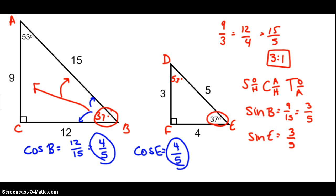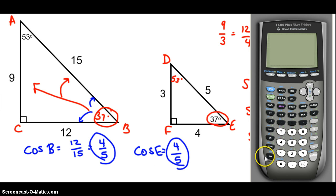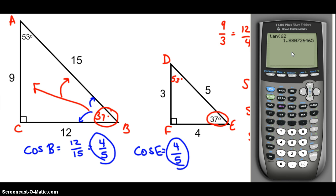If we pop up our graphing calculator and type in an angle measure — let's do the tangent of 62 degrees — that gives us some value. This value represents the ratio of the opposite side to the adjacent side with respect to a 62-degree angle. It doesn't matter what the actual side lengths of the right triangle are. We're really just using the ratios — the idea of similarity. When we use our trig ratios, we're focusing on the concept that all right triangles with congruent corresponding angles will have the same ratios between their side lengths.